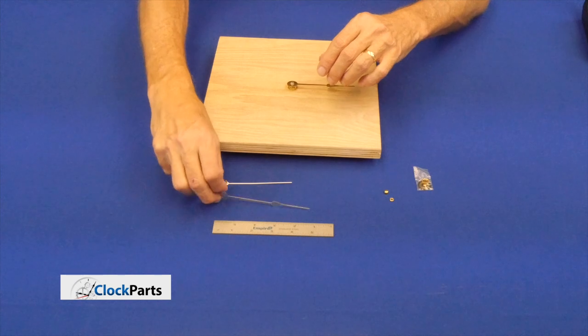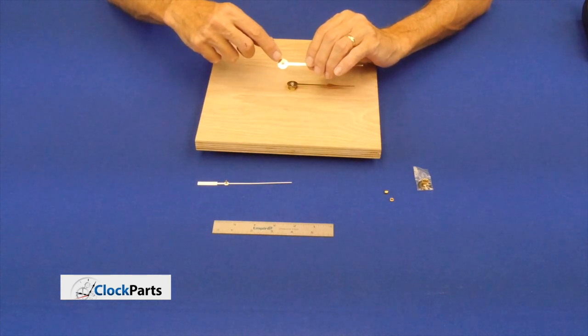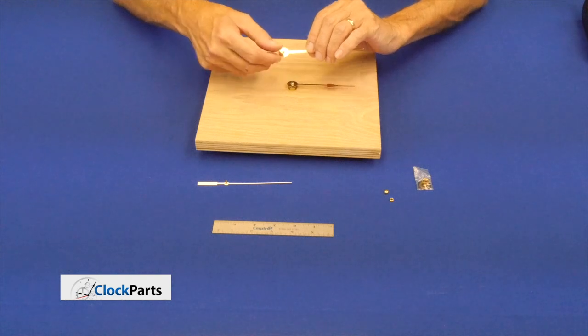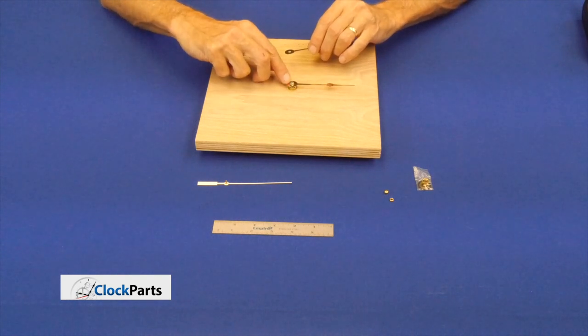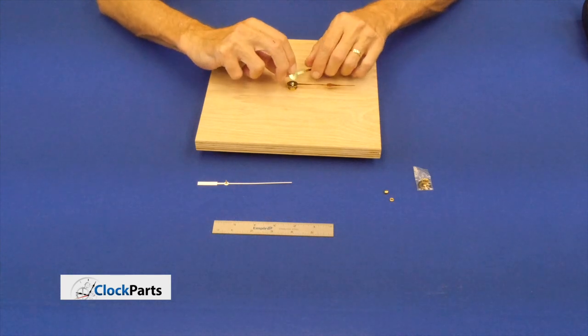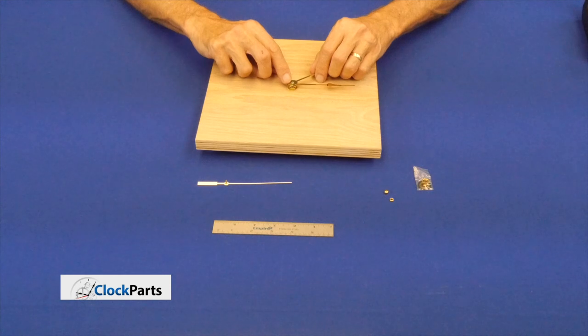Then you take the minute hand, and you'll notice right here that the minute hand is oblong shaped. And the shaft is an American I shaft, so you'll put that oblong right on that shaft.